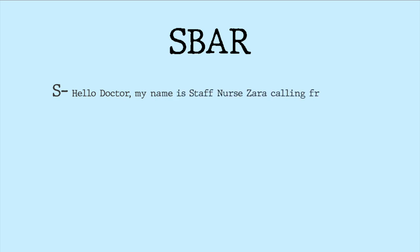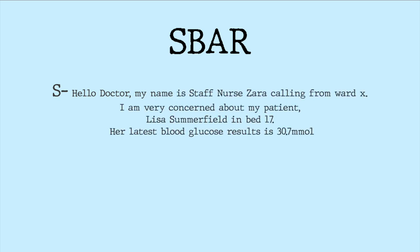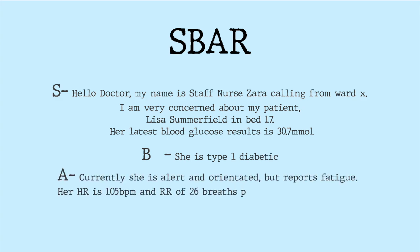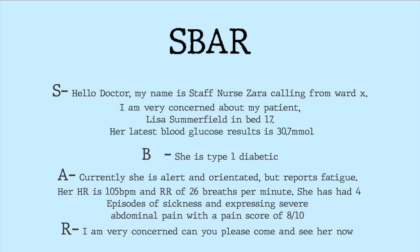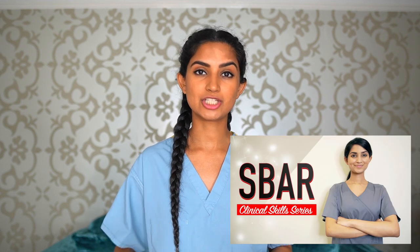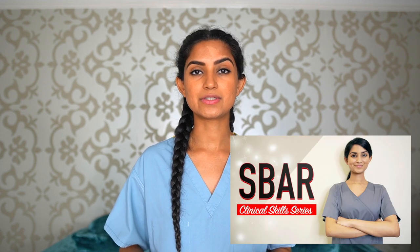Hello doctor, my name is staff nurse Zara calling from Ward X. I am very concerned about my patient Lisa Summerfield in bed 17. Her latest blood glucose result is 30.7. She is type 1 diabetic. Currently she is alert and orientated but reports fatigue. Her heart rate is 105 beats per minute and respiratory rate of 26 breaths per minute. She has had four episodes of sickness and is now expressing severe abdominal pain with a pain score of 8 out of 10. I am very concerned — can you please come and see her now. I have done a video on how to carry out an SBAR assessment which you can check as part of my clinical skills series playlist.